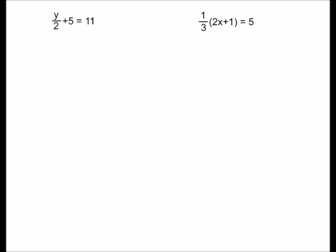Now we get on to where people start to struggle — this is solving equations with fractions. Generally we don't want fractions in equations, and it's good to get rid of them as soon as convenient. This first one, y over 2 plus 5 equals 11 — I'm going to subtract 5 from both sides, the plus 5 and minus 5 cancel, and on the right I get 6. Then to get rid of the divide by 2, I multiply by 2, which gives y equals 12.